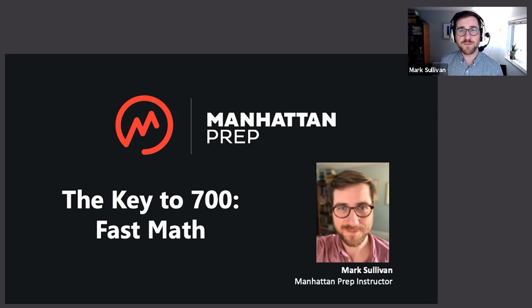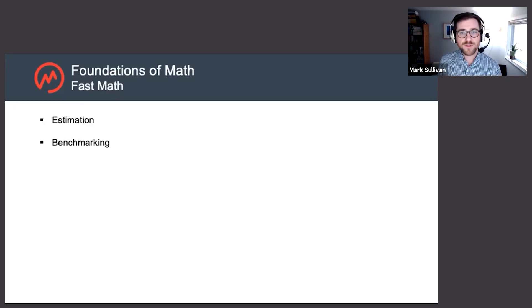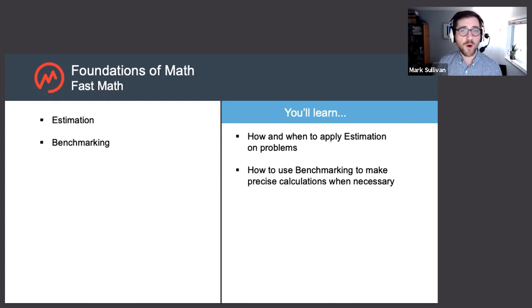So I don't mean moving more quickly through methods you might already be using. I mean learning some new techniques that will allow you to actually solve problems in less time by doing fewer steps, doing easier steps, doing computations more efficiently. We're going to focus on two such techniques in particular today: estimation and benchmarking. We're going to learn how and when to use estimation, when it might actually be good enough, and how benchmarking can help us correct an estimation error when that extra level of precision is actually needed.